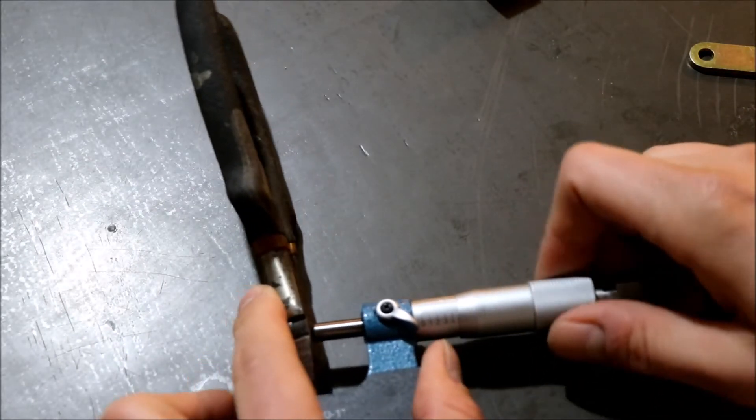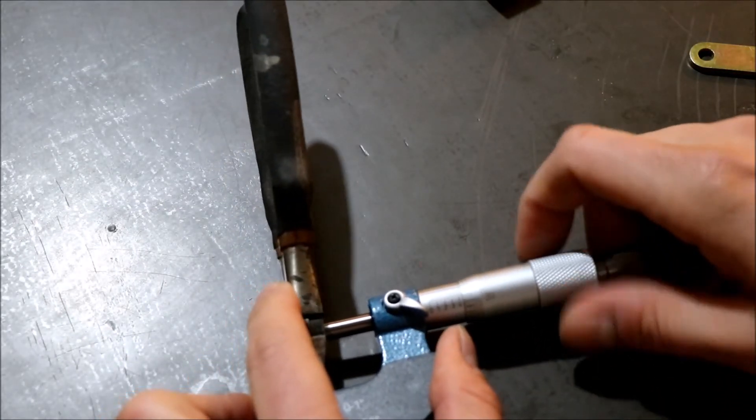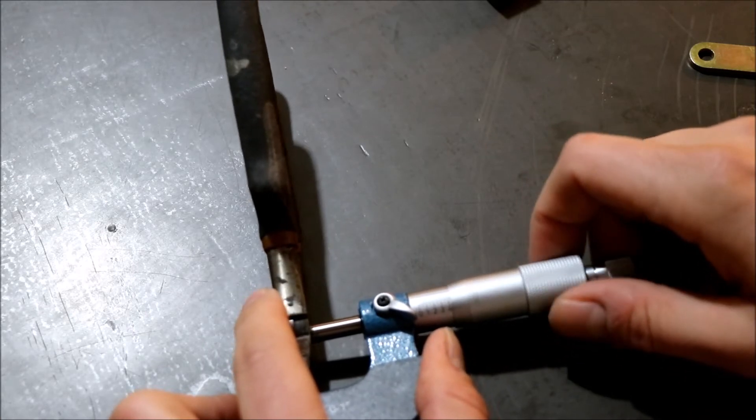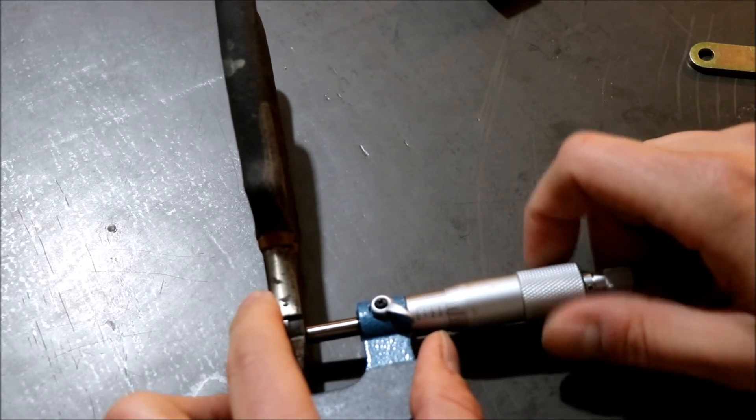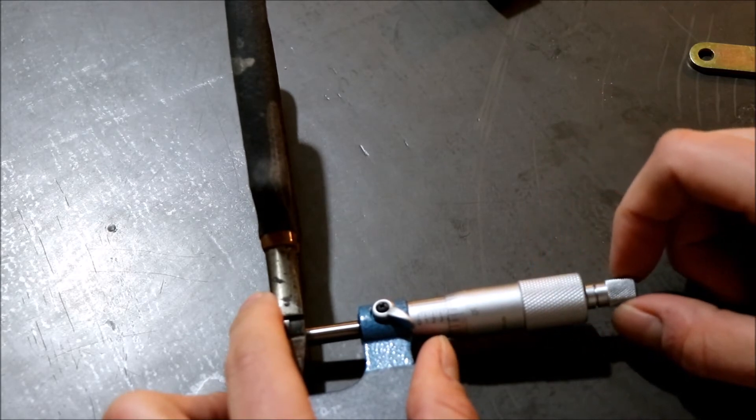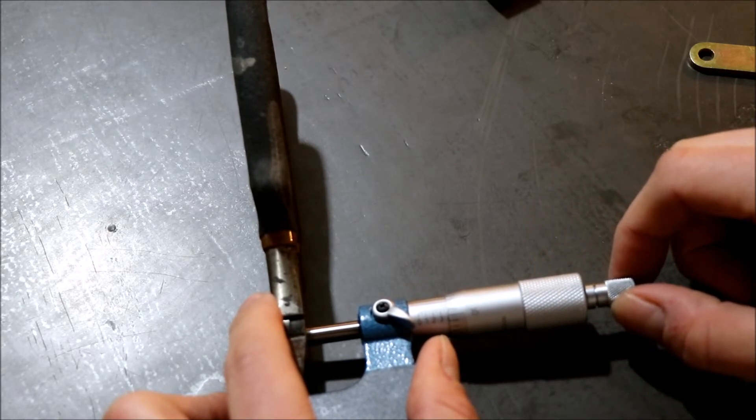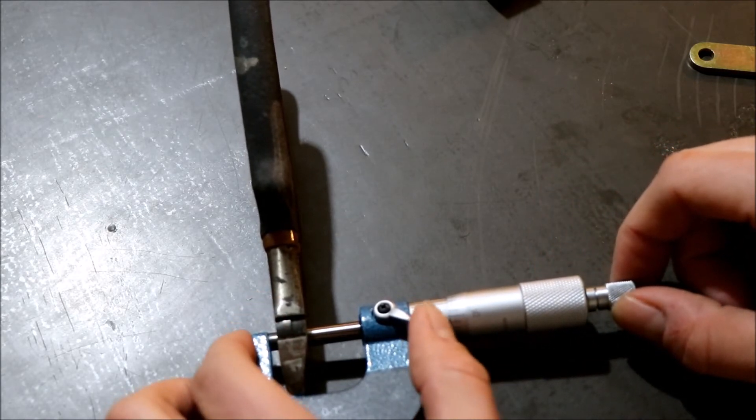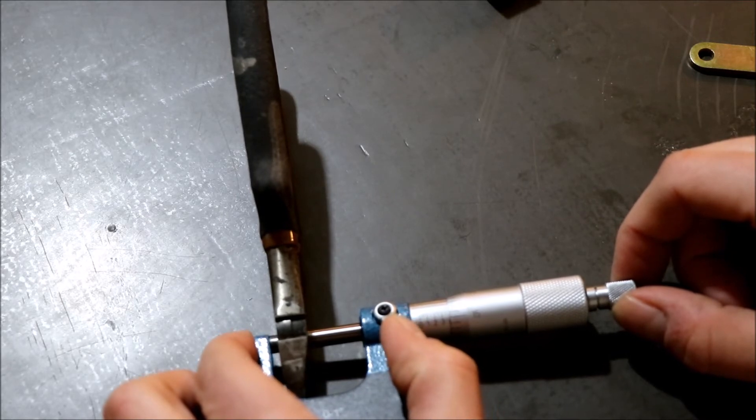Alright so here we go. I'm just going to try to balance this here so that there's not a lot of any side to side torque. And then we'll go ahead and click our ratchet and then go ahead and lock your barrel.